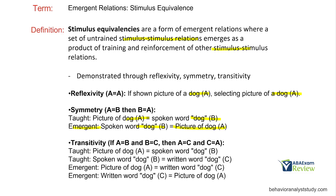Transitivity is true stimulus equivalence. If I teach you picture of dog A equals spoken word dog B, and I teach you spoken word dog B equals written word dog C, we don't need to teach the next two ideas to get true equivalence — you might have to, but that's not true equivalence, not a true emergent relation. Remember, these are untaught relationships. What's going to emerge now that A equals B and B equals C is that A equals C and C equals A.